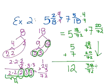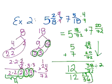So, there we go. I have 12. And then 38 and 72 are both divisible by 2. And so, this would be 12 and 19 36ths. And that, I know for sure, is not divisible by anything else.